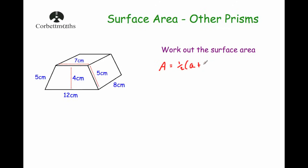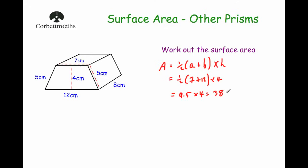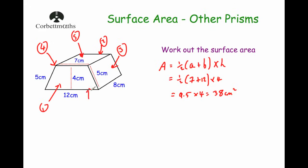Let's start with the front. The area of a trapezium equals half times (a + b) times h, where a and b are the two parallel sides. So that's half times (7 + 12) times the height of the trapezium which is 4 — ignore 5, that's the diagonal, not the height. Brackets first: 7 plus 12 is 19, half of that is 9.5, times 4 equals 38 centimeters squared. That's the area of the front, face one, and also the back, face two — both are 38 cm².